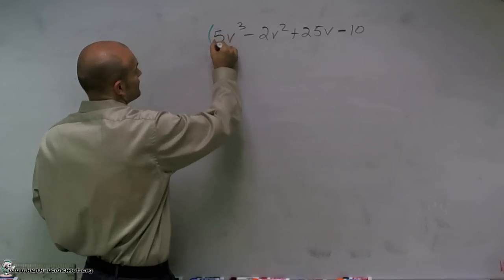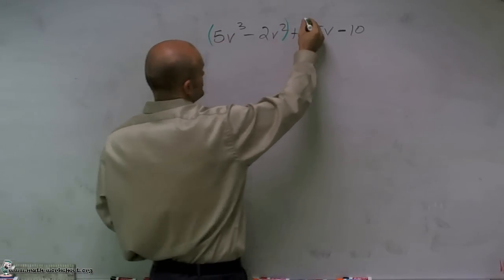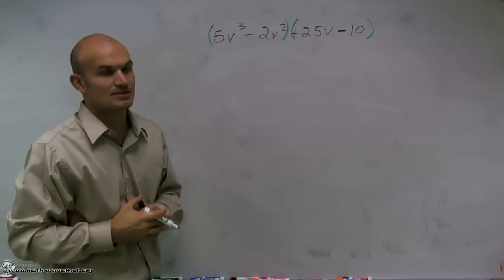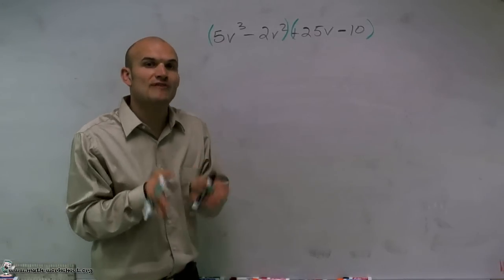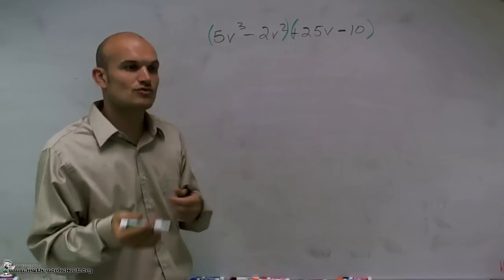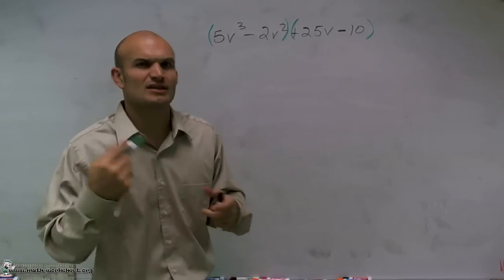So what I'm going to do is I'm going to group my first two terms and group the last two terms. Then I'm going to factor out the GCF of my first two terms and my last two terms and try to get the same term. I'll explain that a little bit further.